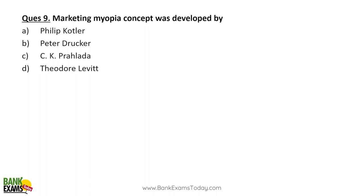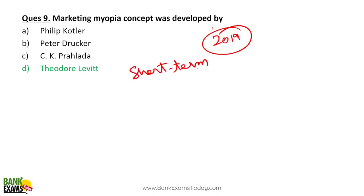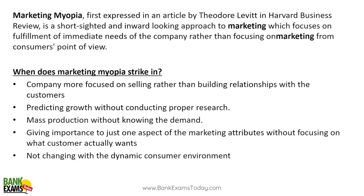Marketing myopia — this question was asked in 2019 and the concept was developed by Theodore Levitt. Marketing myopia is when you are focused on short-term profit making and not focusing on the long-term growth of the business. A good example is WhiteHat Jr, whose ads were spreading false information — that is marketing myopia.